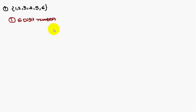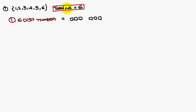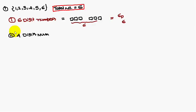Now consider a problem. Consider the numbers 1, 2, 3, 4, 5, 6 — total six numbers. To find six-digit numbers using different digits: six blanks filled with six numbers, the answer is 6P6. For four-digit numbers with different digits: four blanks with total six numbers gives 6P4.